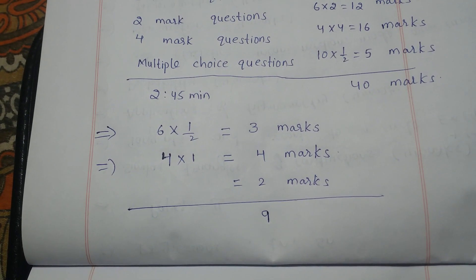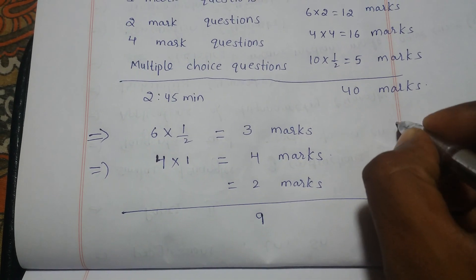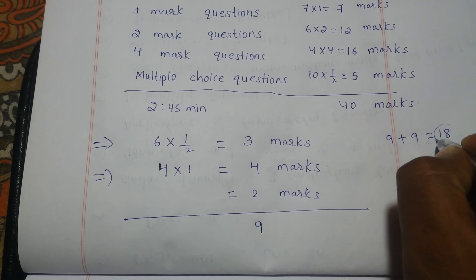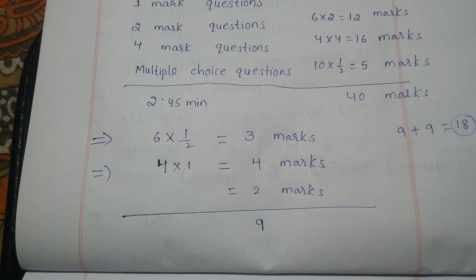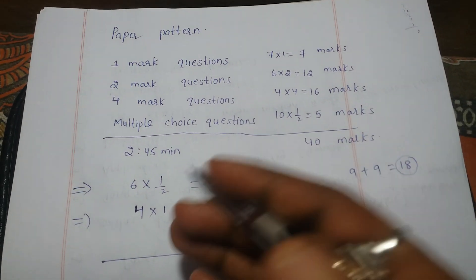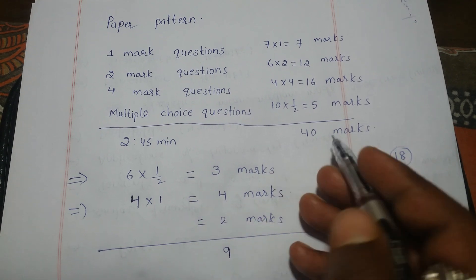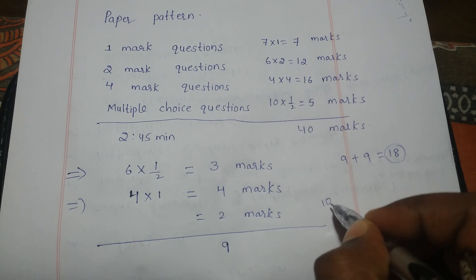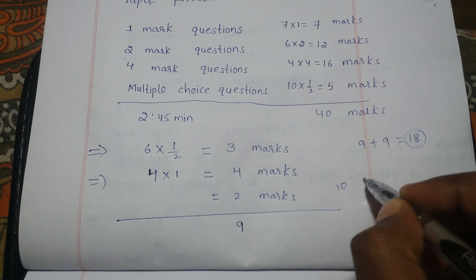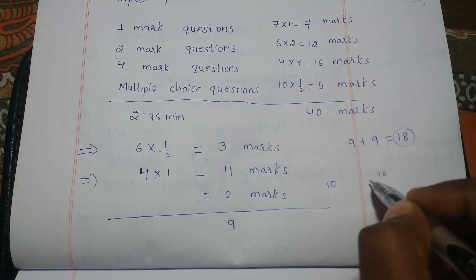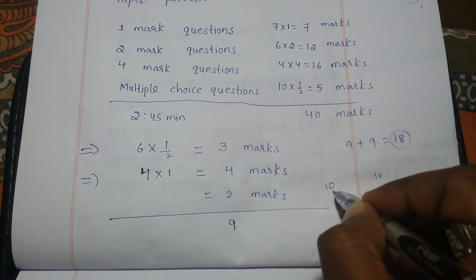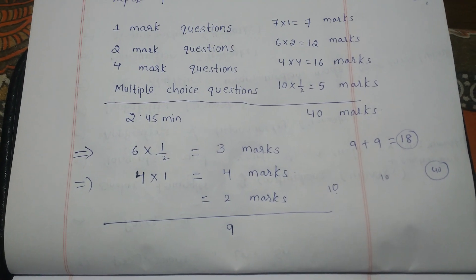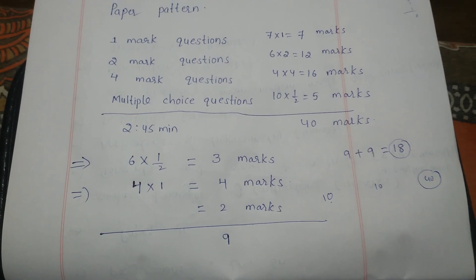So almost 10 marks we are getting for attempting. In paper 1, 9 marks; in paper 2, 9 marks — total 18 marks we will get just for attempting the questions. Then if you write some answers for two-mark and four-mark questions, you may get 10 to 15 marks in paper 1 and 10 to 15 in paper 2 — that's 40 marks total, so you will simply pass the examination.